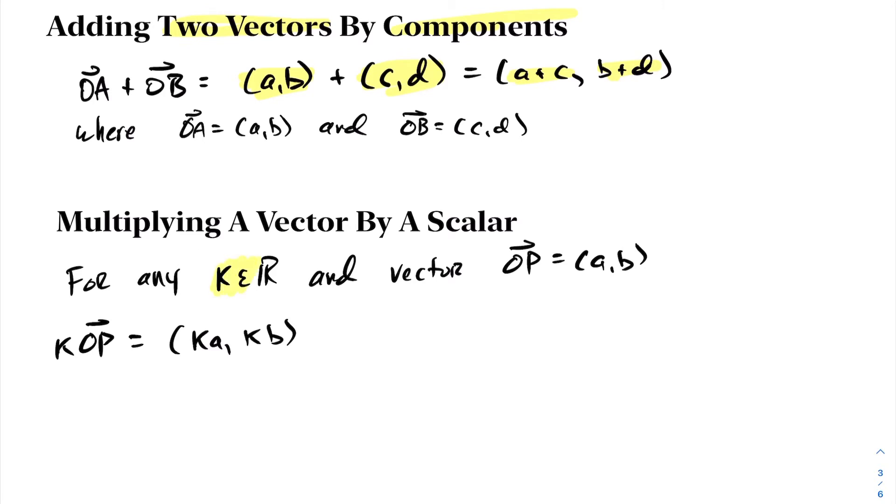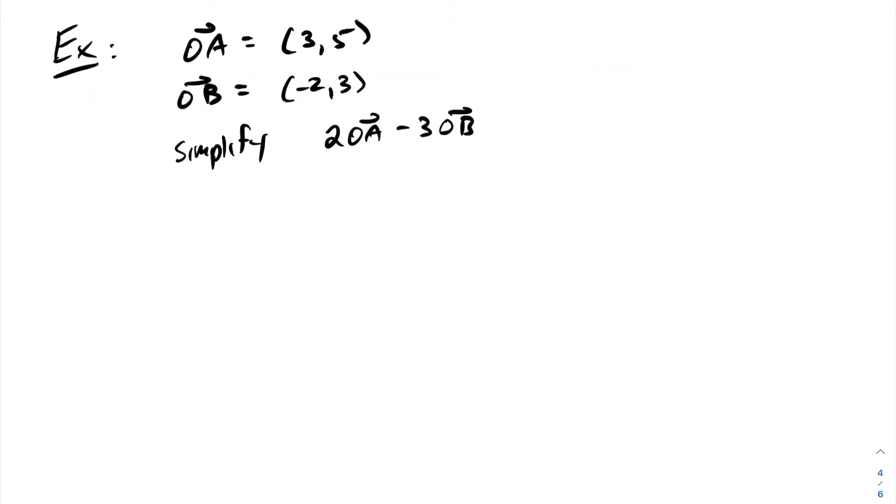Likewise, for any scalar K, if you want to multiply K by some vector OP, it's just a matter of distributing that K to each component, KA, KB. In this situation, we have a vector OA written in component form as (3,5), and OB in component form is (-2,3). We want to simplify this expression.